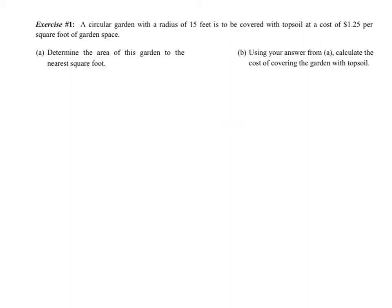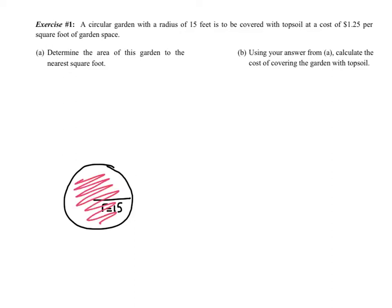Let me give you a quick example. A circular garden with a radius of 15 feet is to be covered with topsoil at a cost of $1.25 per square foot of garden space. So we have a circular garden, radius of 15, and I just want to cover this garden in topsoil — something people do every summer.